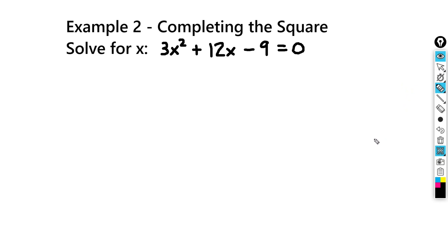In our second example, we're going to complete the square again. We've got this quadratic equation: 3x squared plus 12x minus 9 equals 0. In this case, the coefficient in front of x squared is not 1, it's 3.